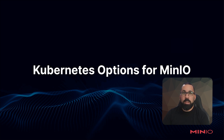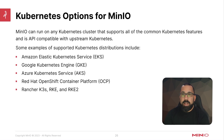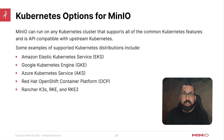First, let's talk about the Kubernetes options for Minio. Minio can run on an array of Kubernetes clusters that support all the common Kubernetes features and is API compatible with upstream Kubernetes. For the most part, that's all of the distributions of Kubernetes that you're likely going to run into — they're all going to be API compatible and able to run Minio, because Minio just requires that all of those different API endpoints are built into Kubernetes.